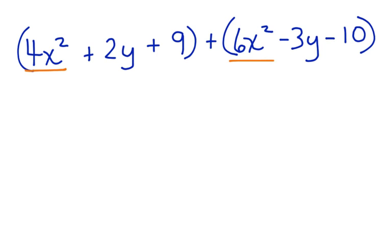4x squared and 6x squared are alike. We have 2y and negative 3y are alike. And we have 9, positive 9, and a negative 10. Notice that the sign goes with the number that follows it.